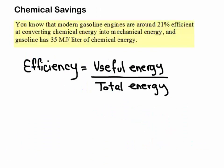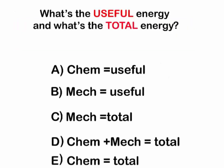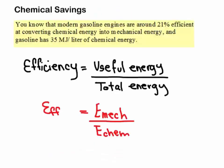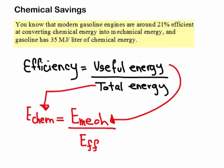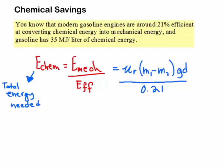From the definition of efficiency, we have the useful energy over the total energy. Mechanical energy would be our useful energy, and the chemical energy would be our total energy. Useful energy is the actual motion of the car, which we have as emac. E-chem is going to be the total energy that we need. So let's solve for e-chem, and this is what we get. At this point, we can just plug the formula we got into emac and use 21% as the efficiency as given in the question.